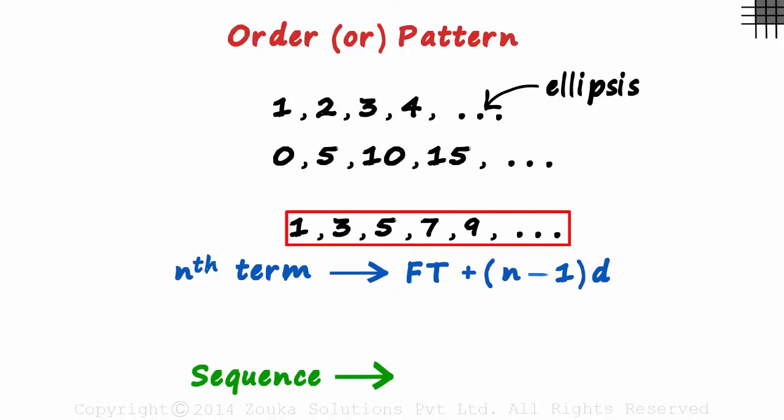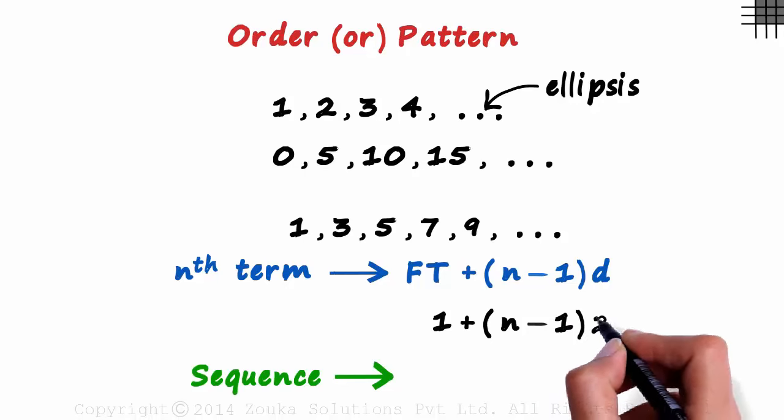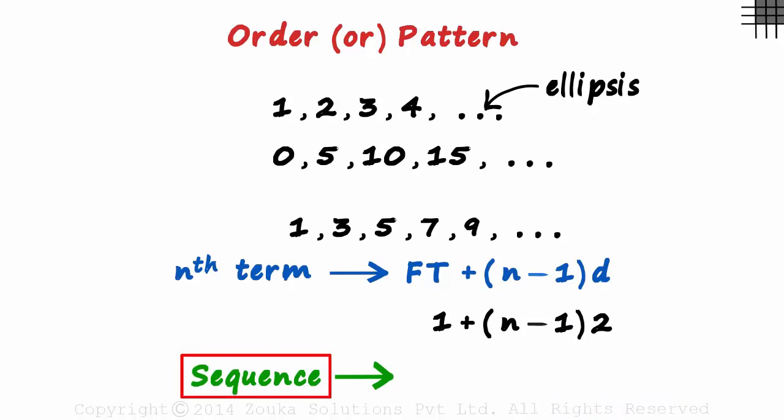In this example, as the first term is 1 and the common difference is 2, the nth term will be 1 plus n minus 1 times 2. How do we define a particular sequence?